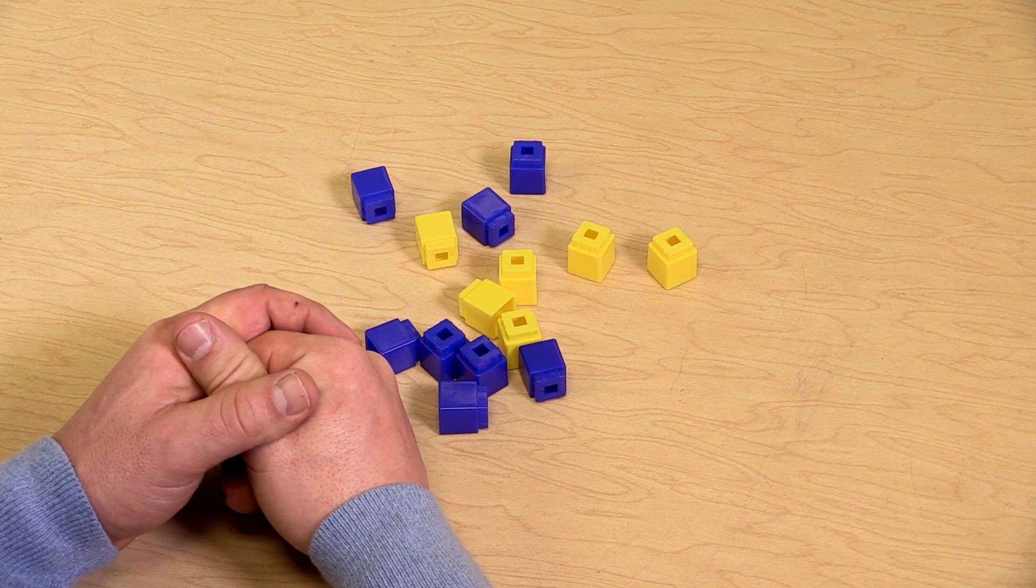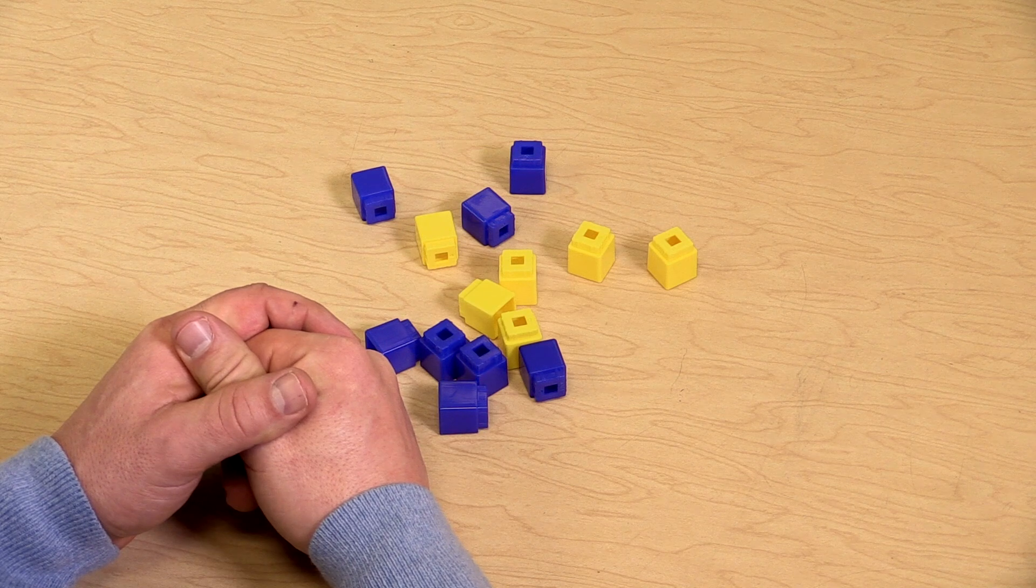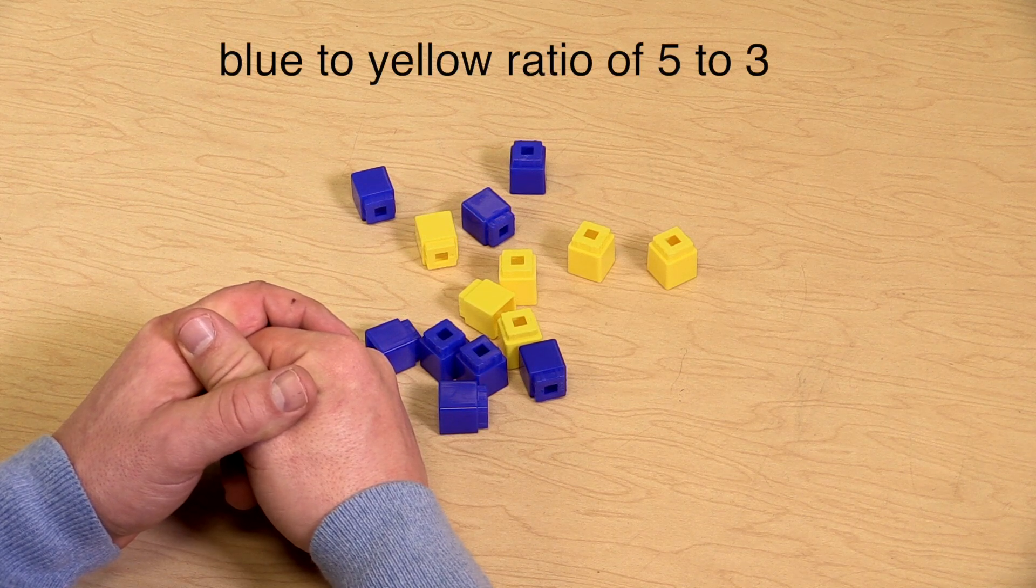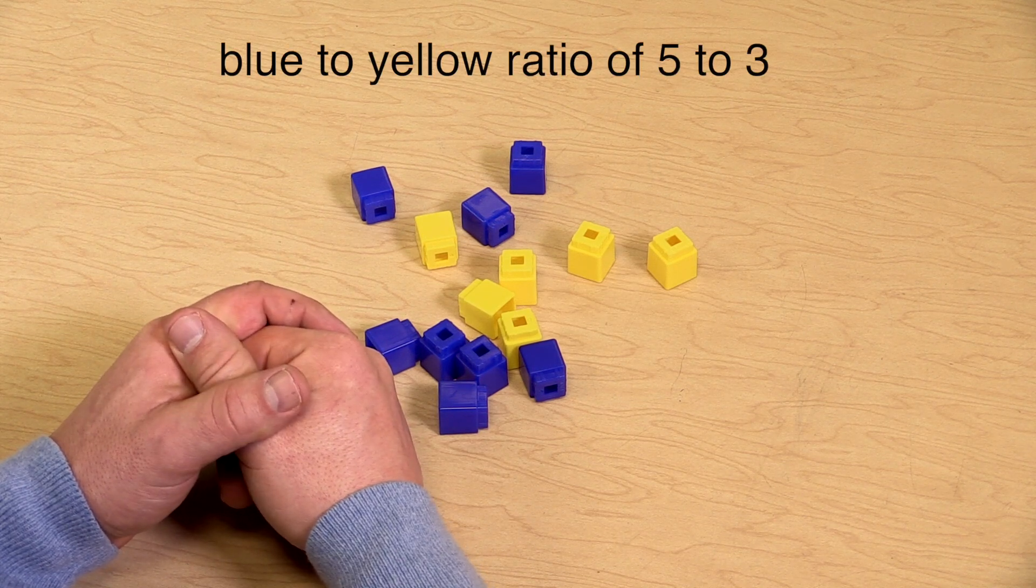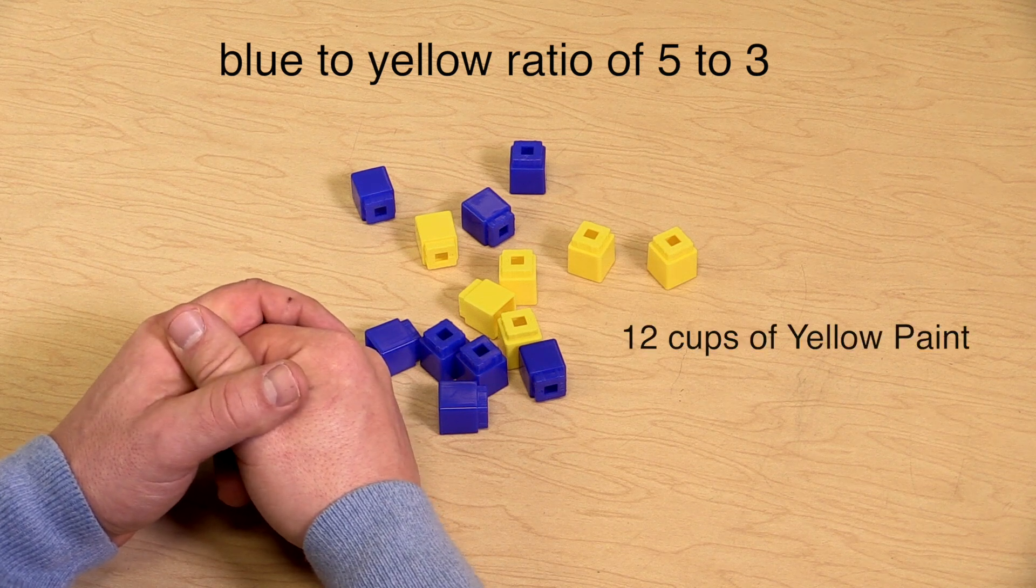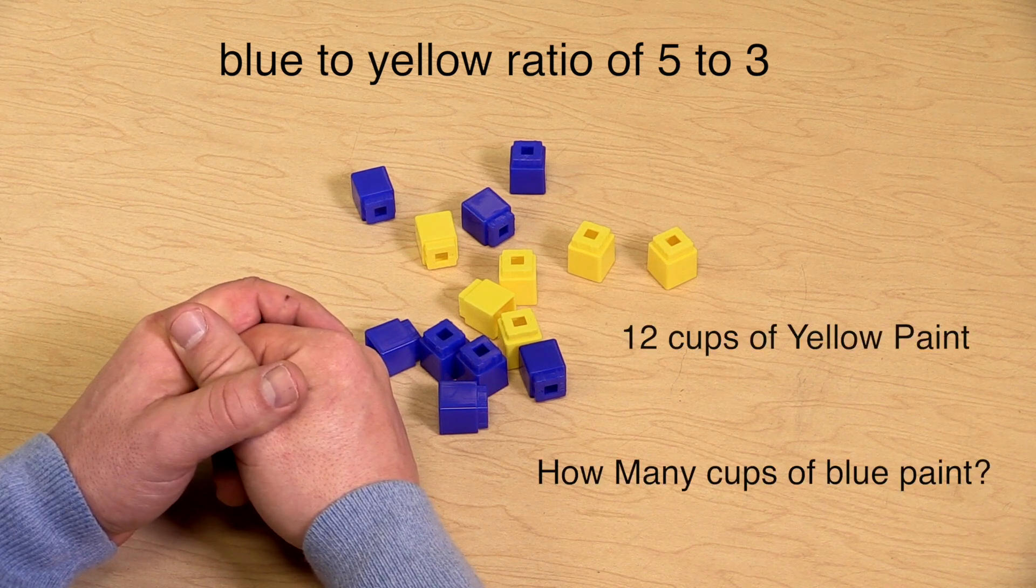The art teacher is mixing blue and yellow paint in order to make a gorgeous shade of green. She is mixing the blue paint to the yellow paint at a ratio of 5 to 3. If she uses 12 cups of yellow paint, how many cups of blue will she need to use?